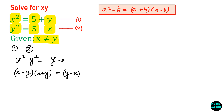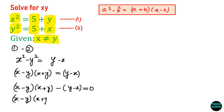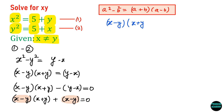Now let us take y minus x to the left-hand side, so this will become x minus y times x plus y, minus of y minus x equals 0. Observing the minus sign, this becomes x minus y times x plus y plus x minus y equals 0. I can take x minus y common, giving x minus y times x plus y plus 1 equals 0.